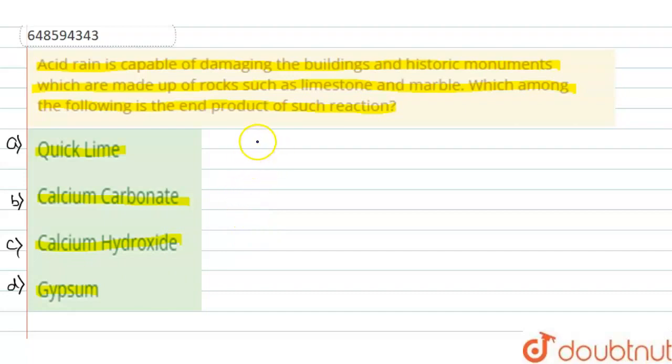First of all, acid rain, what is it called? Acid rain is sulfuric acid and nitric acid. So, acid rain with marbles...